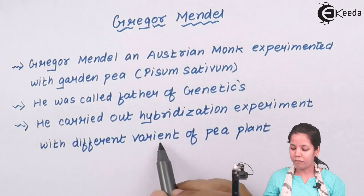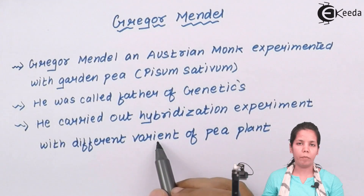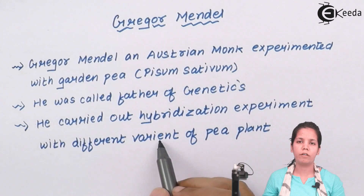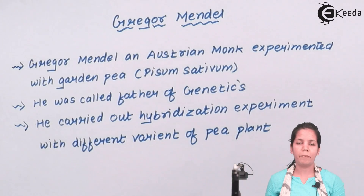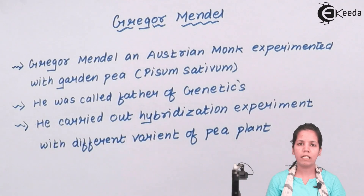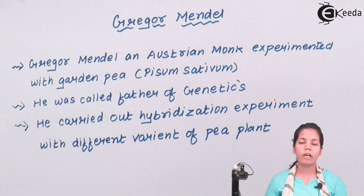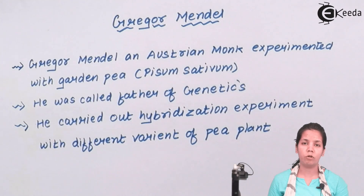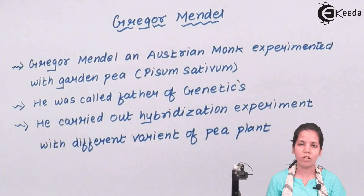He proved these terms with his monohybrid and dihybrid experiments. He carried out hybridization experiments with different variants of pea plant. What Mendel did was select all the dominant varieties of crops and the recessive varieties, and he hybridized both the dominant and recessive pea plant varieties to produce a progeny — the F1 generation. Mendel also formulated various laws: the law of independent assortment, law of co-dominance, law of incomplete dominance, and also laid down terms like multiple alleles and pleiotropy. That is the reason he is also known as the father of genetics.